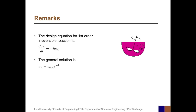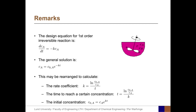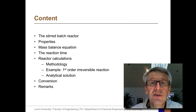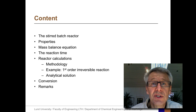Finally, some remarks. The design equation for a batch reactor with a first-order reaction is dC_A/dt equals negative K times C_A, and the general solution is C_A equals the initial concentration times e to the negative K·t. From this expression, we can calculate a number of quantities: for example, we can calculate K; another possibility is to calculate the time needed to reach a certain concentration; and finally, one can use the equation to back-calculate the initial concentration. The content of this screencast was the stirred batch reactor, some properties and the mass balance equation, the concept of reaction time, reactor calculations, definition of conversion, and summary remarks.